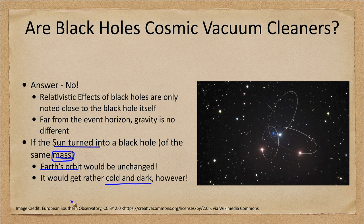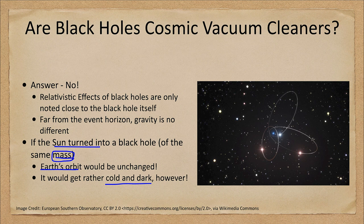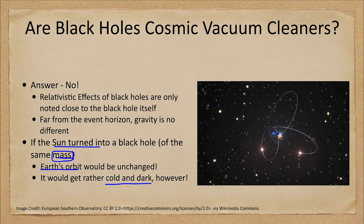But the Earth would continue to orbit just as it does today, as would the other planets. Here we see orbits of several stars around the central mass of the black hole at the center of our galaxy.